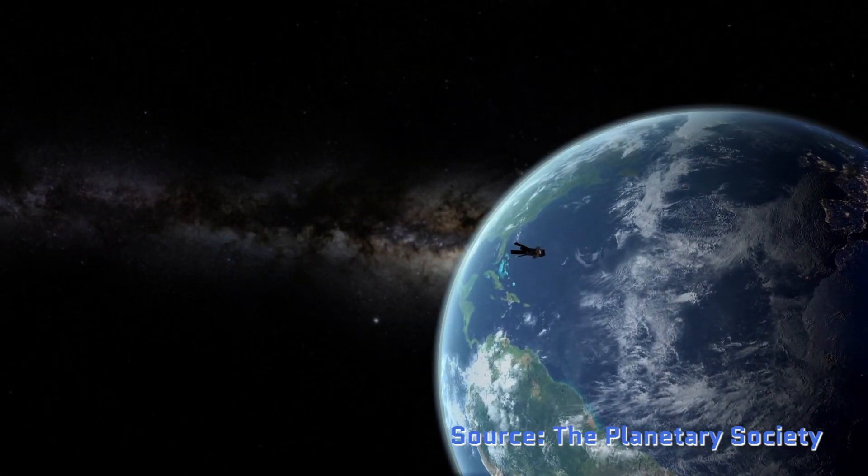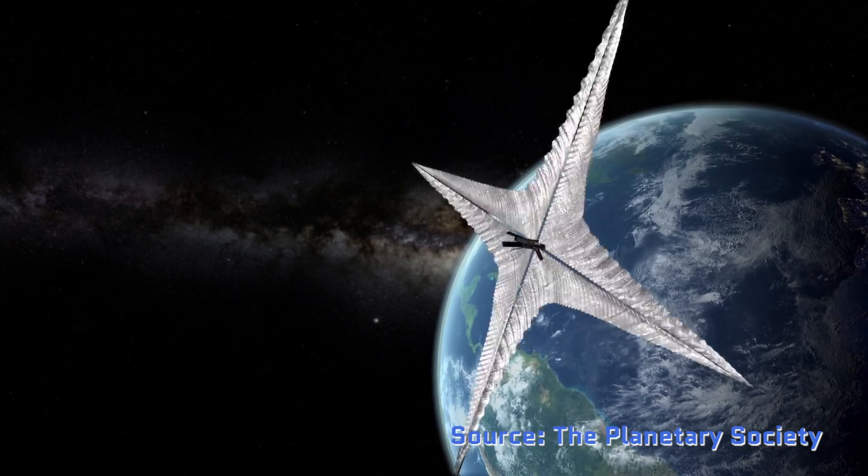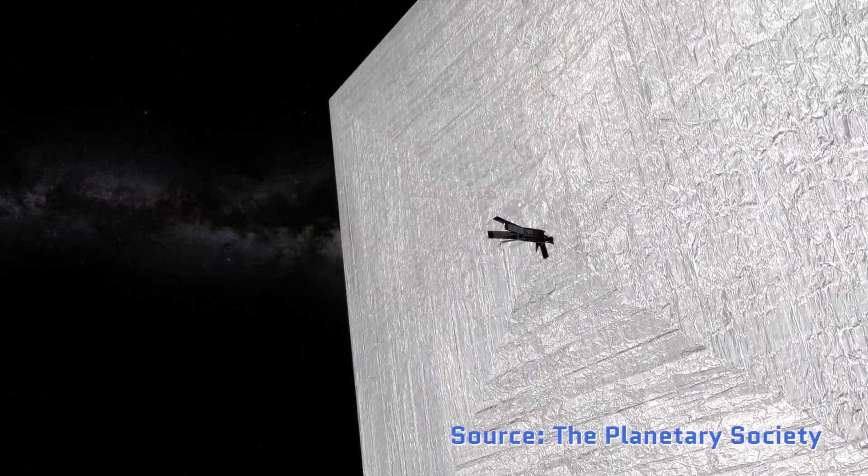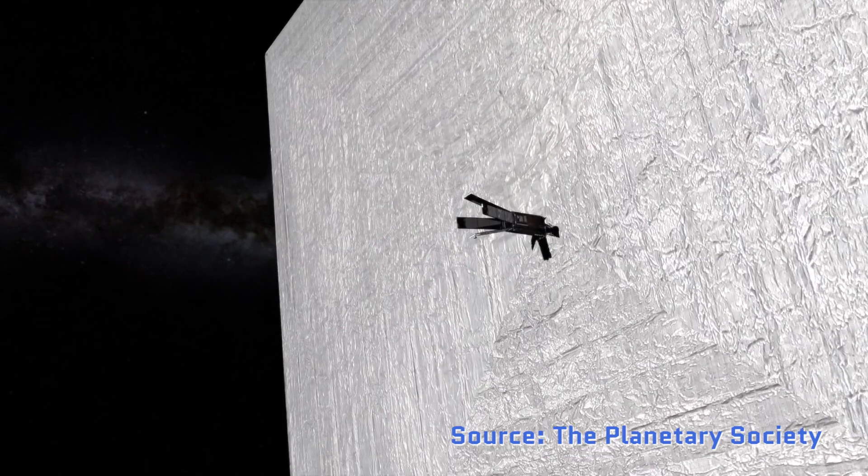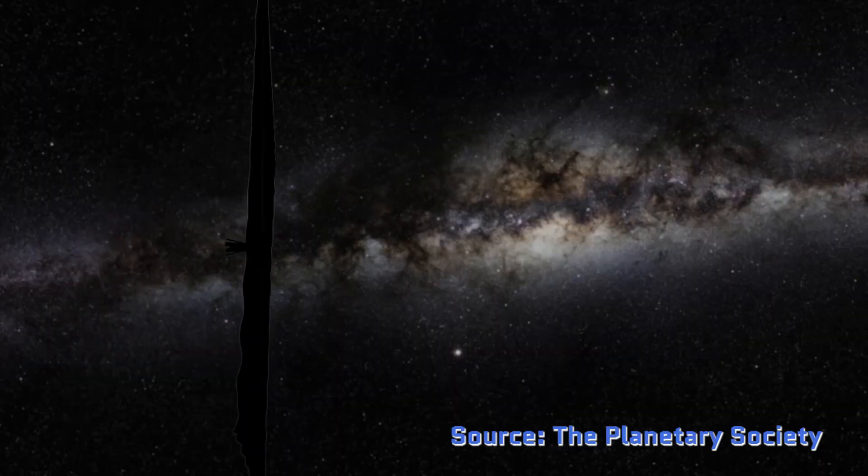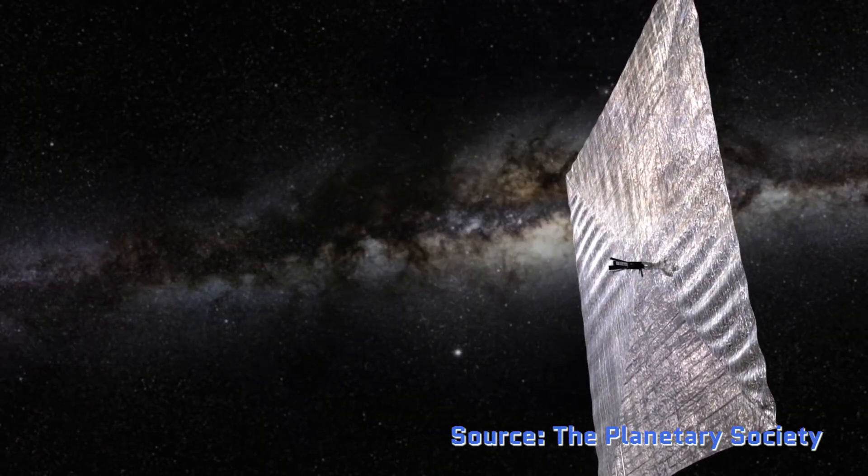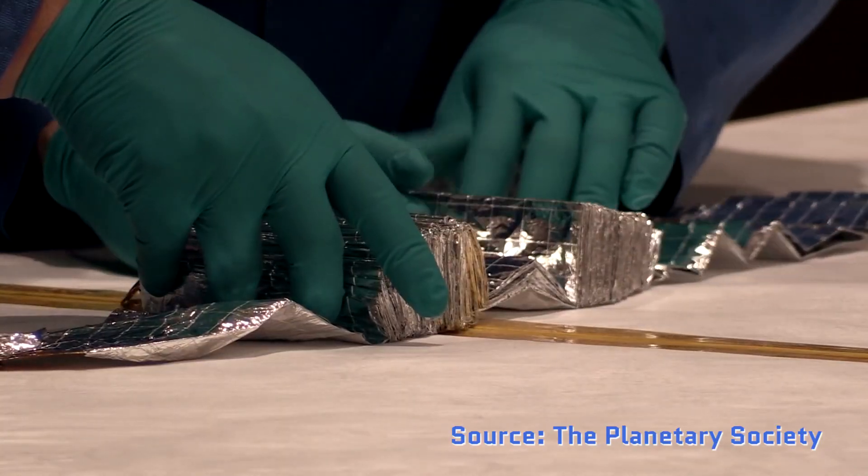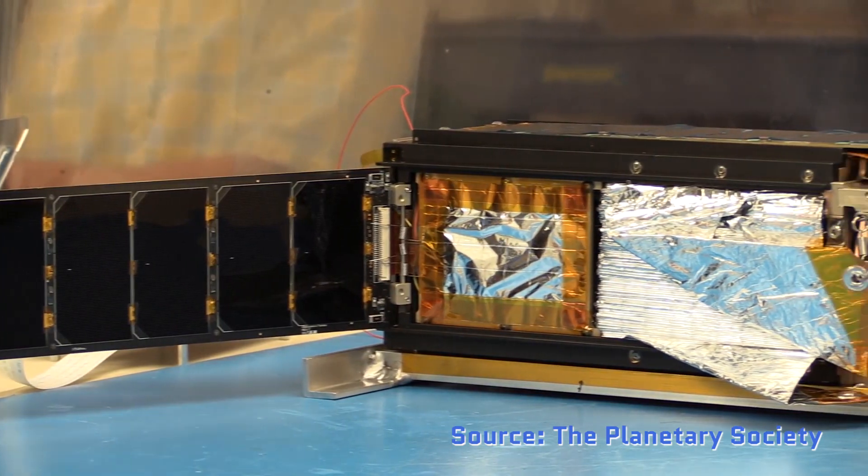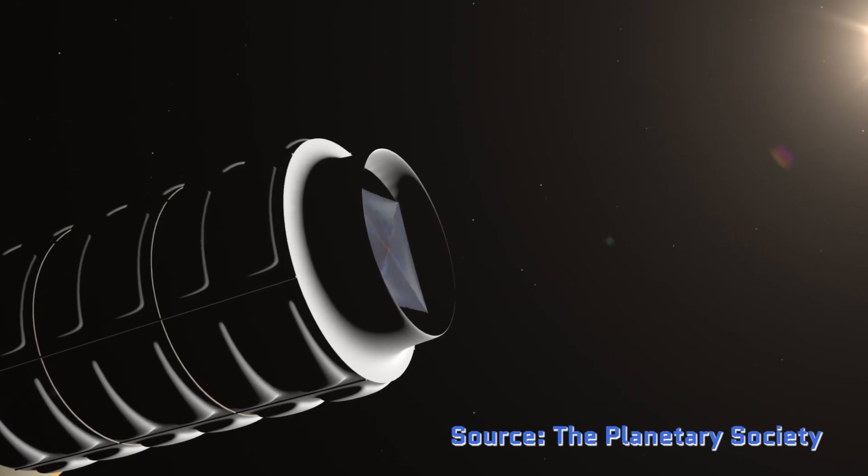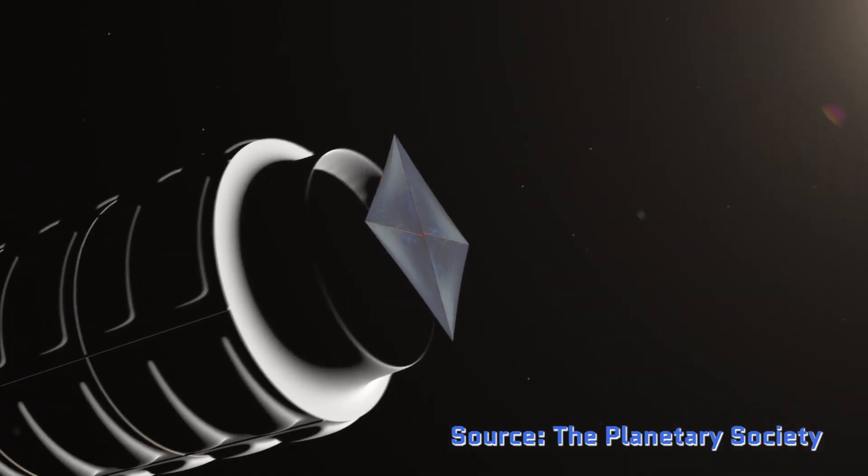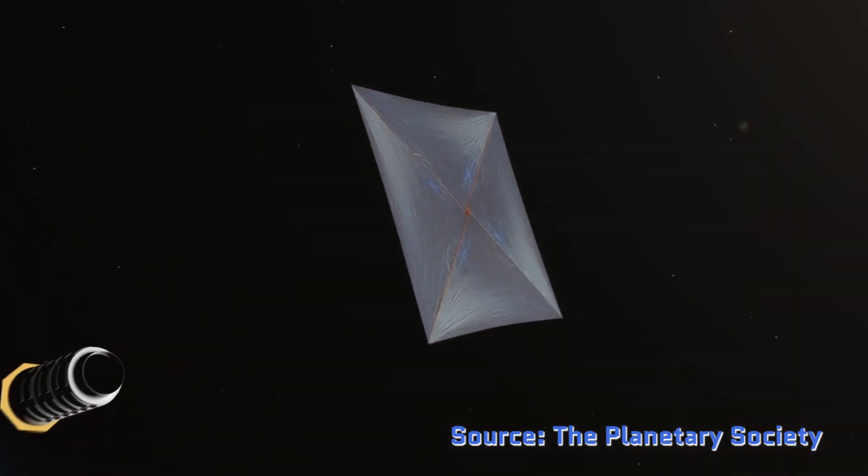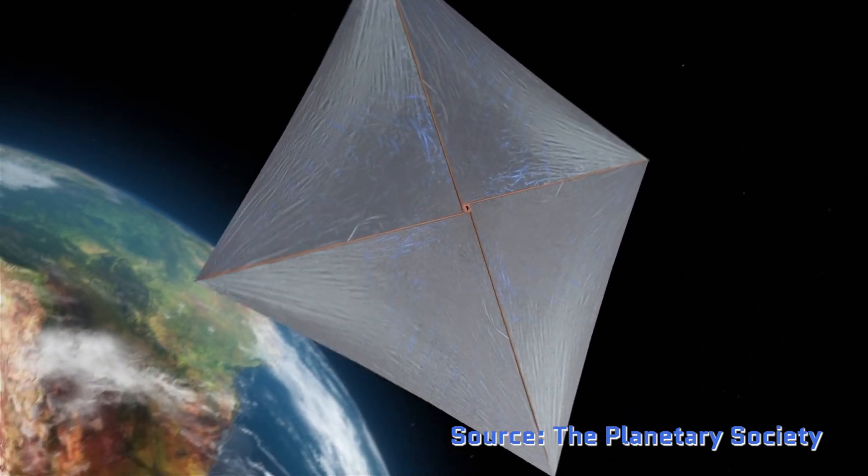But you may also remember I mentioned a group that was interested in sending very tiny probes to the Alpha Centauri system that could get there in much less time. The group is called Breakthrough Starshot and their approach is to develop hundreds of small spacecraft far too tiny to carry a person. The spacecraft would have some very basic sensors and optics. Instead of using rockets for propulsion, they'd use light sails.